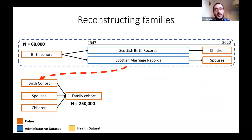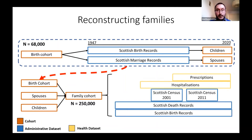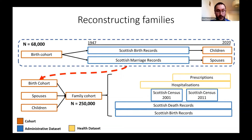We can combine the base cohort with their identified children and spouses to create a very large single family cohort. When we link forward into their modern-day health and socioeconomic records, we can build in rich health data like prescriptions — as Heather was discussing — as well as hospital records, census returns, death records, and birth records, amongst other things.